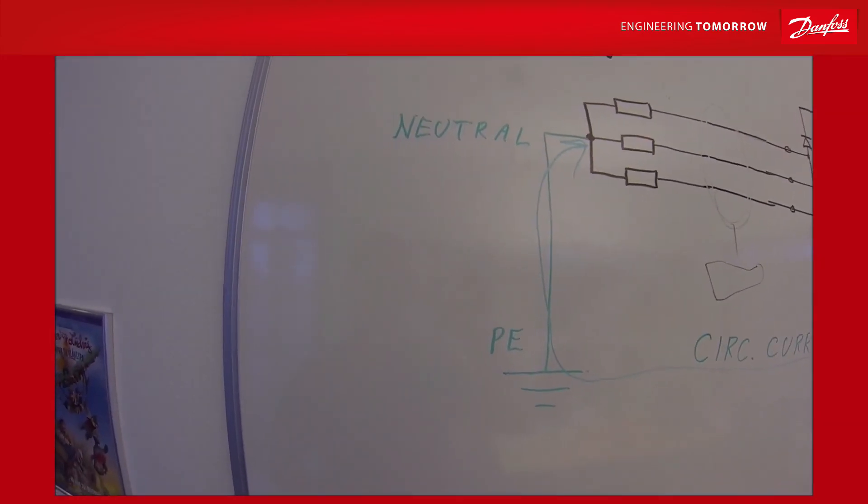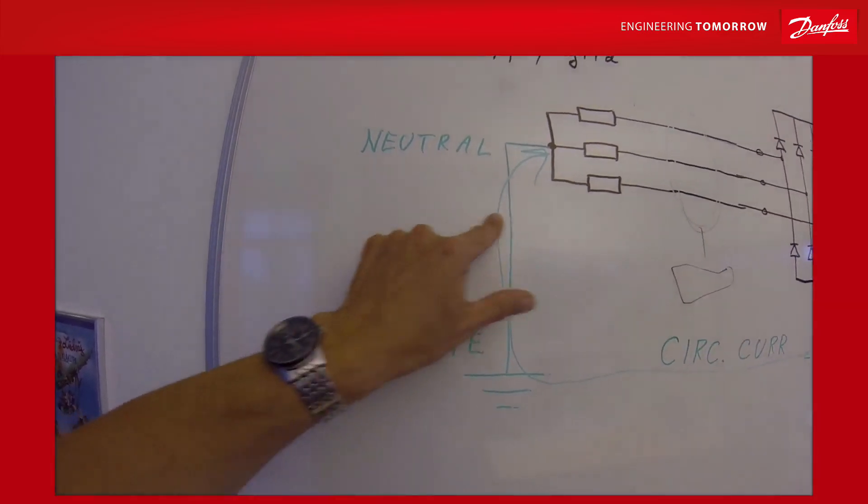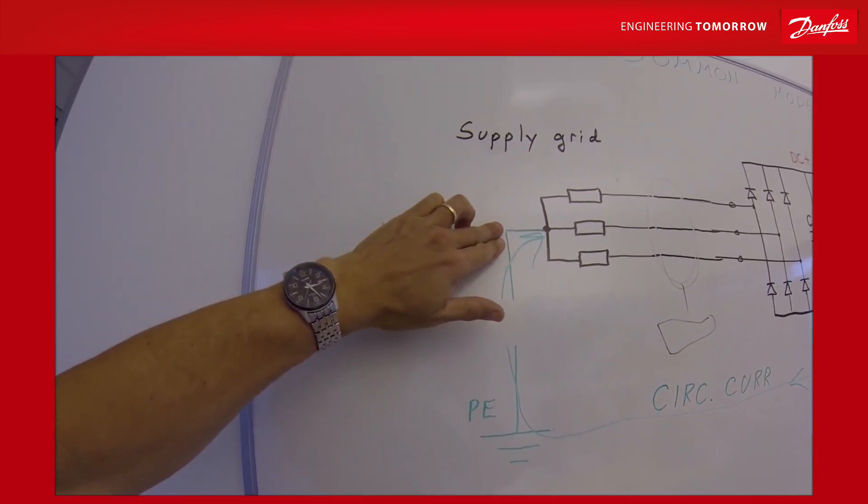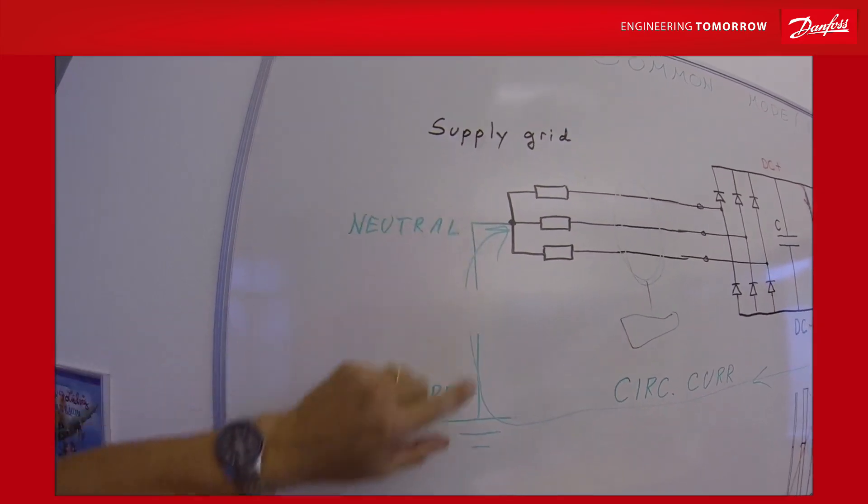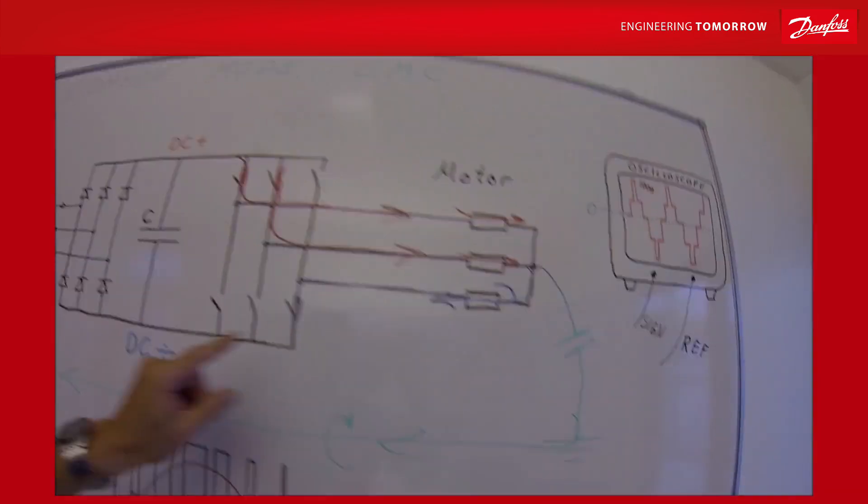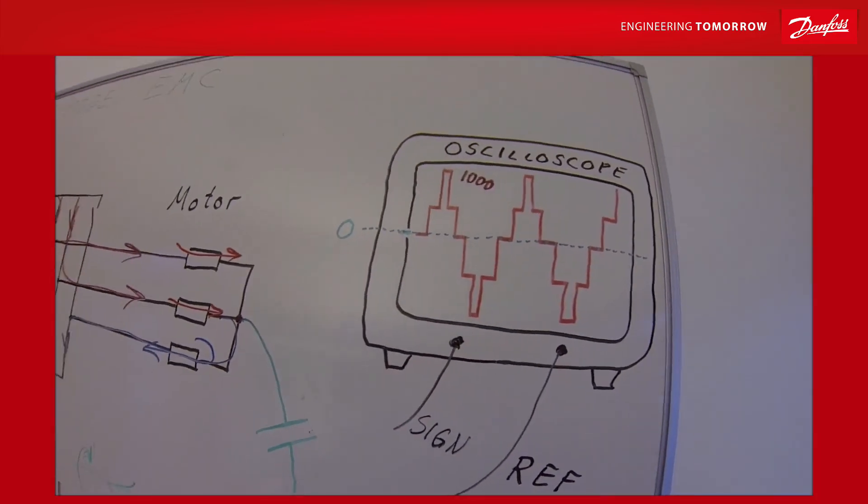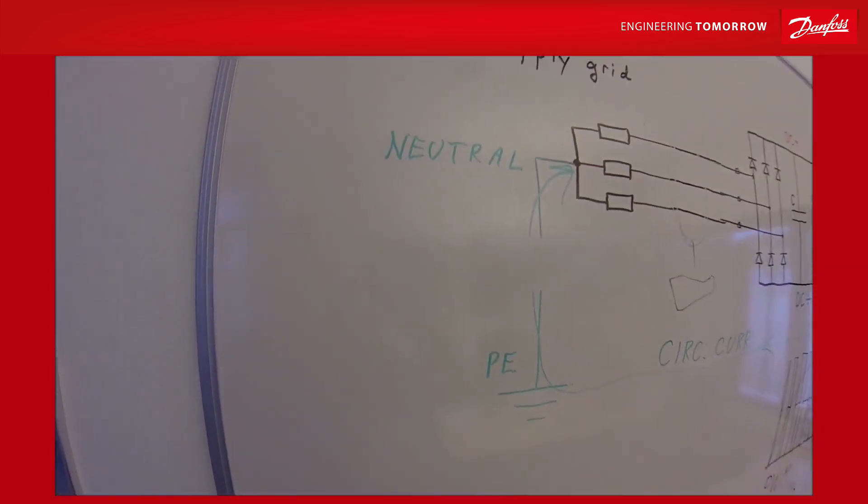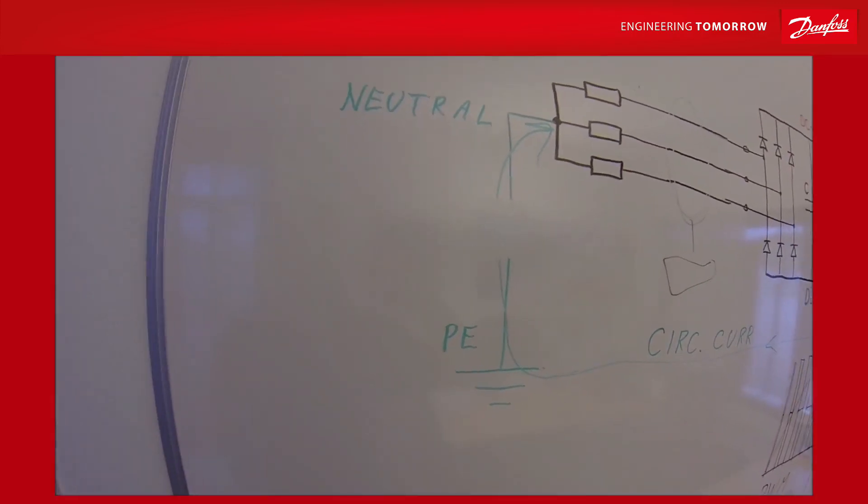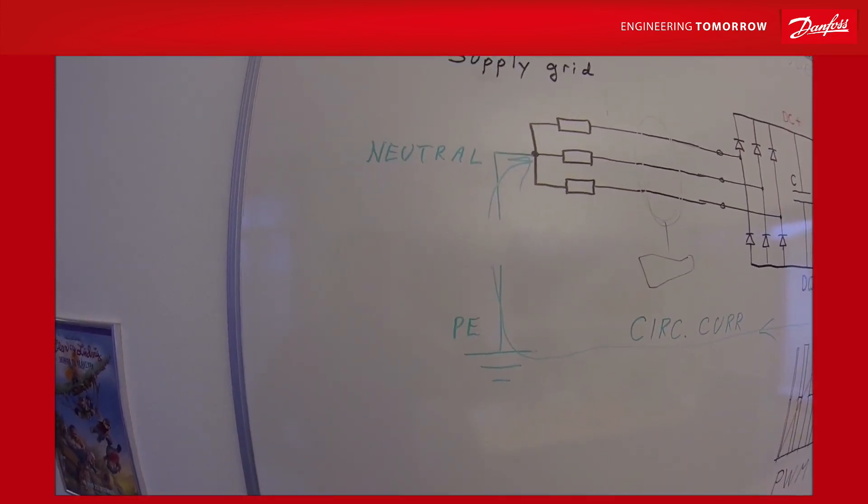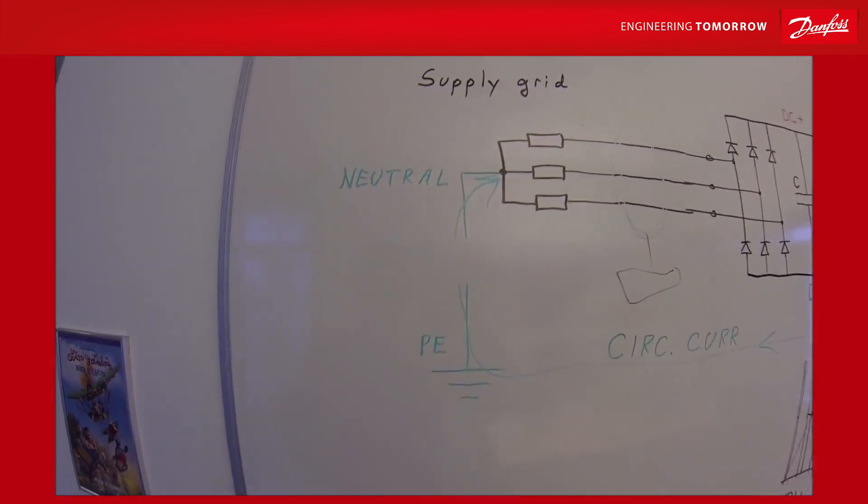Also, some earth fault and insulation metering systems are placed here in this point. It can measure any voltage difference between the neutral point in the generators and transformers and the protective earth. It will also see this common mode, of course. If there is a connection between here and the protective earth, it will see this and it will trip. The answer again is to have an insulation meter which is built for frequency converters. There are many vendors that have this equipment. Bender is one of the best. This one will differentiate between high frequency voltage and the 50 Hz, the real problem.